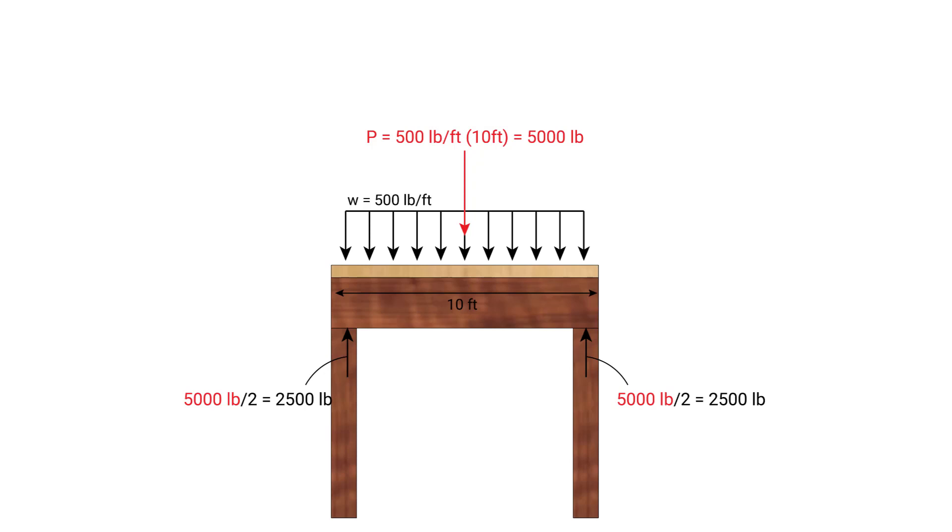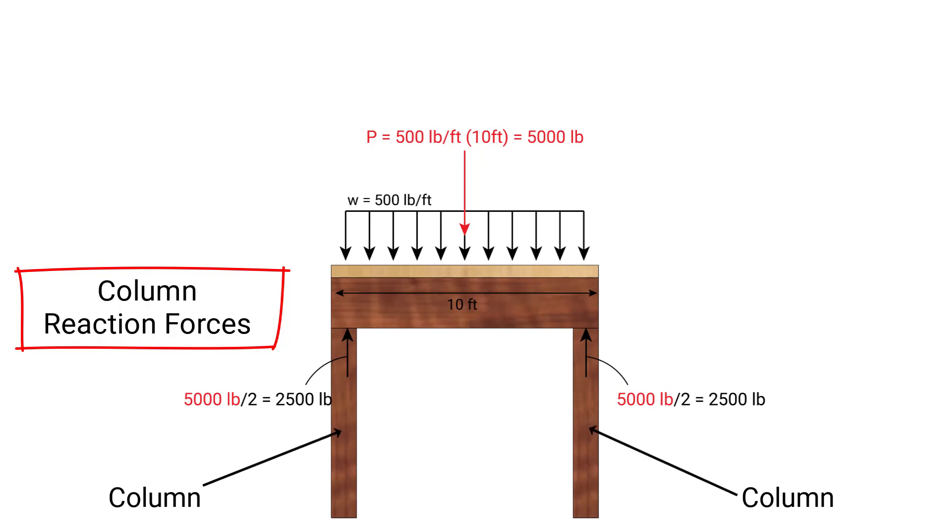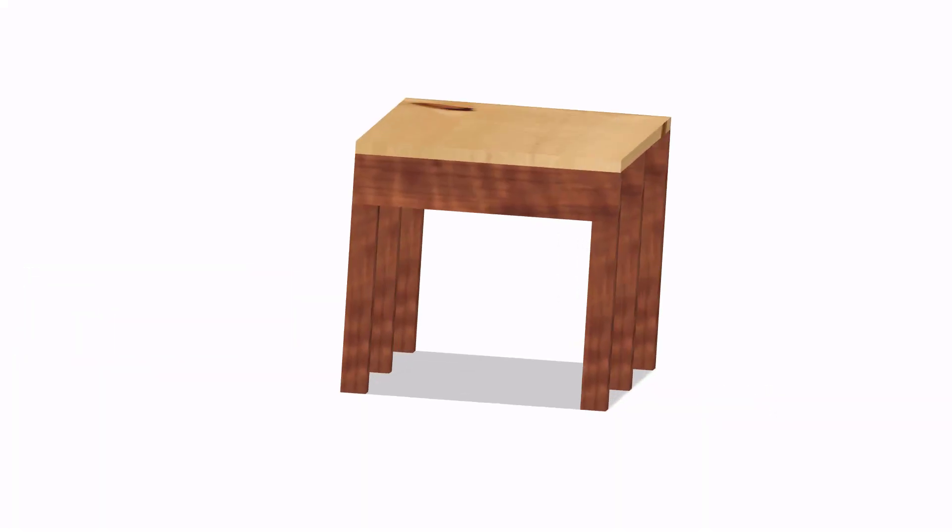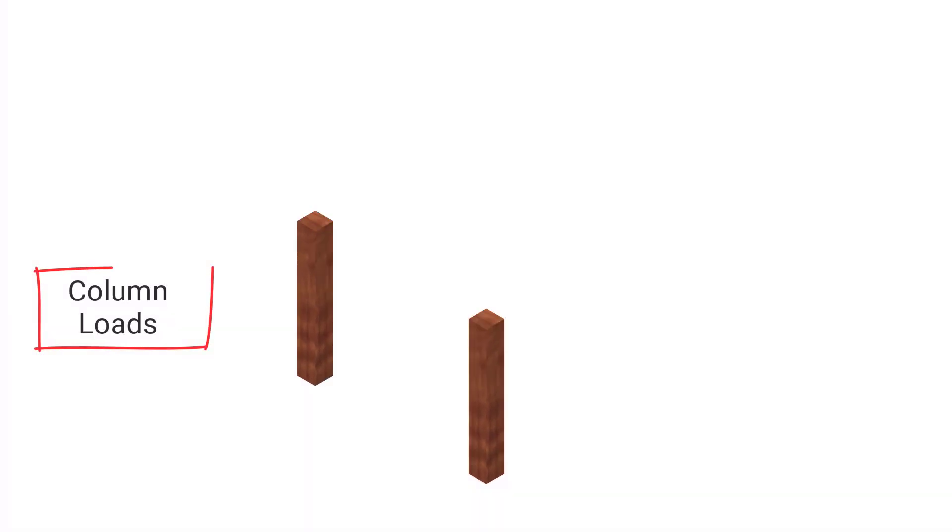Now this point load of 5,000 pounds that acts down must be resisted equally by the columns to maintain equilibrium. So the left column will supply 2,500 pounds, and the right column will supply a reaction of 2,500 pounds. And ultimately, this same 2,500 pounds is the load acting in each column.